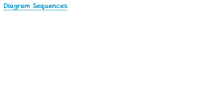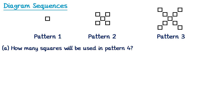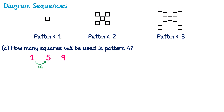Let's have a look at a different pattern. This time the pattern is made using squares. Here's pattern 1, pattern 2, and pattern 3. How many squares will be in pattern 4? I'm just going to write down how many squares are in each of the patterns and then use this sequence. Pattern 1 has 1 square, pattern 2 has 5 squares, and pattern 3 has 9 squares. To get from 1 to 5 we add 4, and from 5 to 9 we also add 4. So to work out pattern 4 we add 4 onto 9, giving 13.